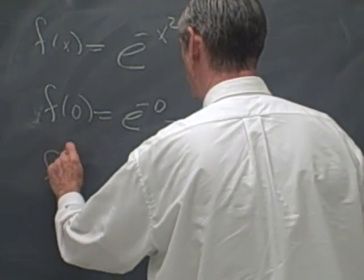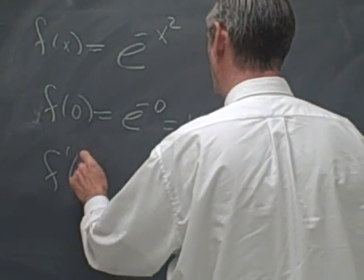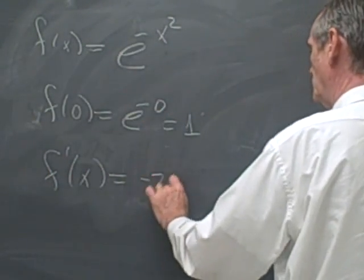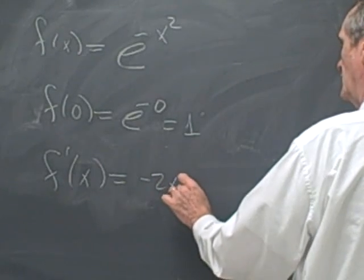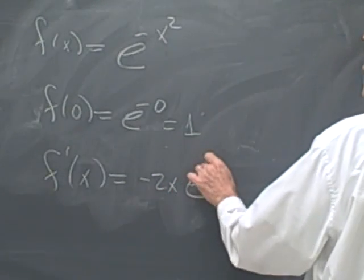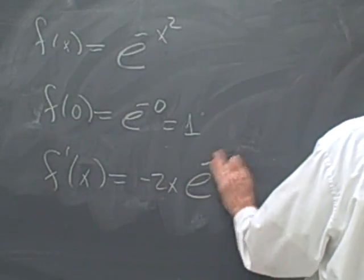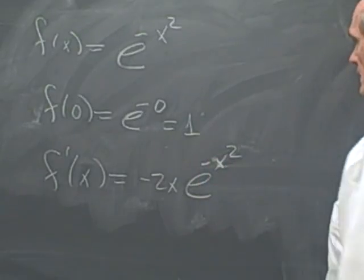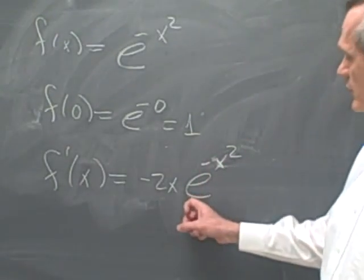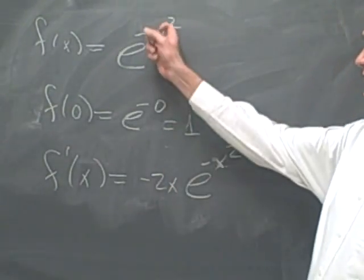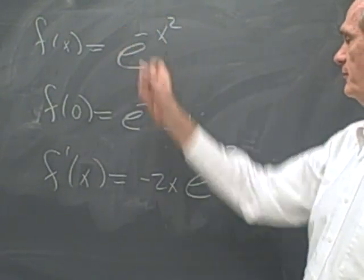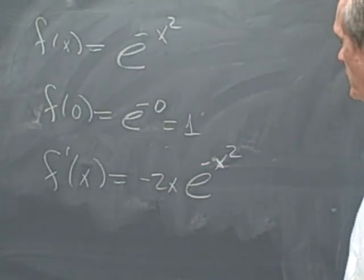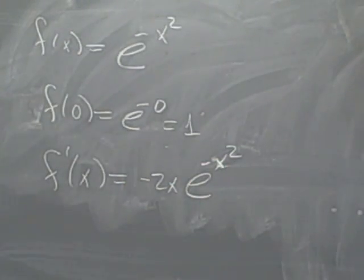Let's compute the derivative. f'(x) is going to be minus 2x times e^(-x²). Remember, we used the chain rule to compute this derivative — the derivative of minus x squared is minus 2x, and then we have e^(-x²).